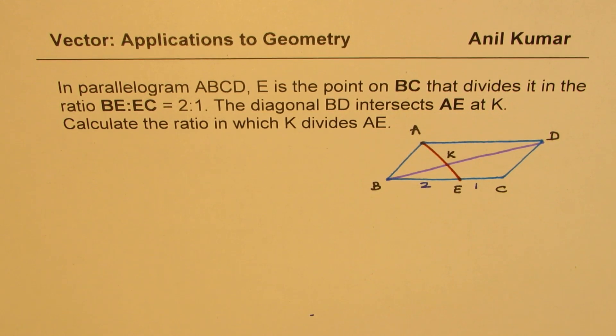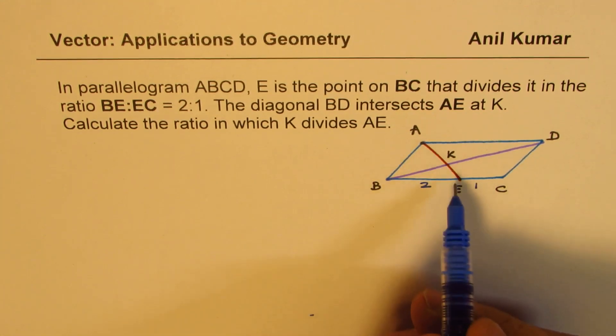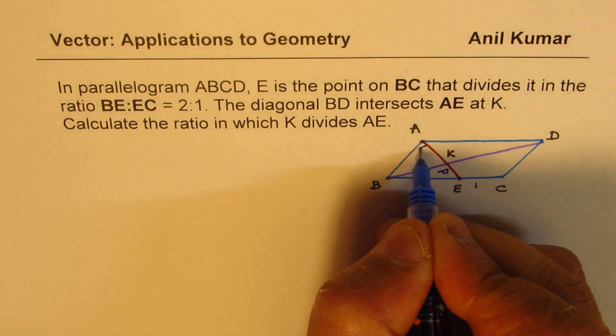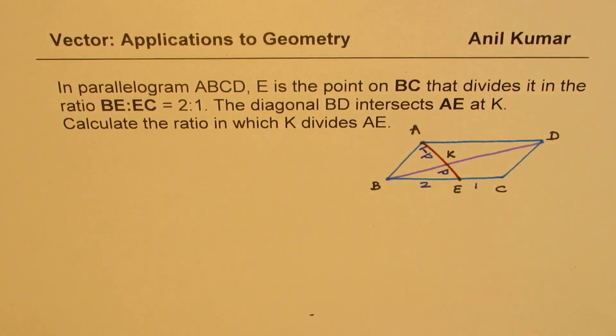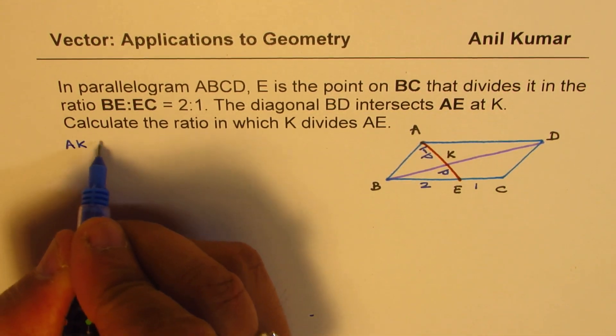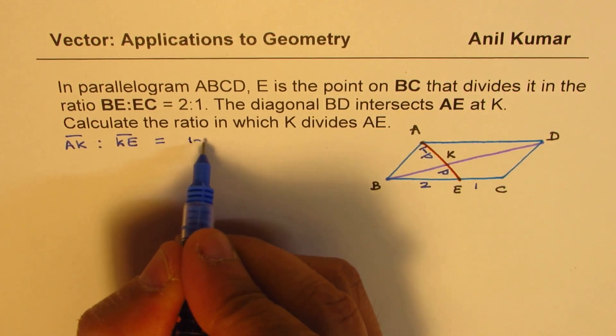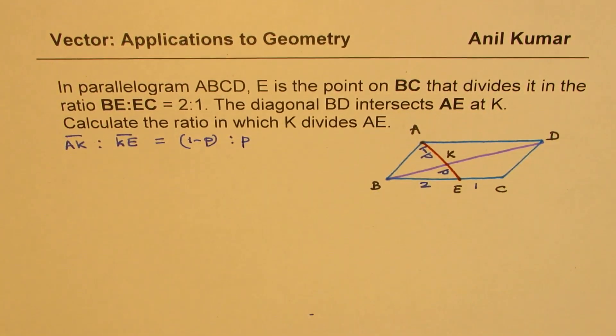Now you can pause the video and answer the question. Here is my thought on this. Let us assume that K divides AE in the ratio P:(1-P). We are using one unit, so in the division formula, this sum will be 1. That is the advantage of using P and (1-P) - we will avoid fractions. So AK:KE = (1-P):P.